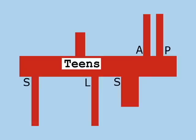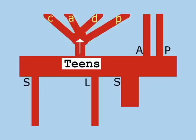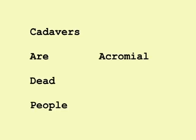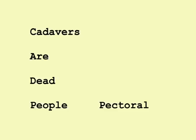If you remember the mnemonic 'teens grow up and die,' you'll know that 'teens' — the thoracoacromial trunk — goes up, flows towards the head, and has four sub-branches, remembered with 'cadavers are dead people': C — clavicular branch; A — acromial branch; D — deltoid branch; P — pectoral branch.